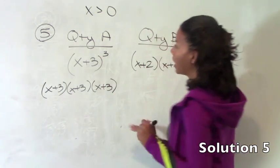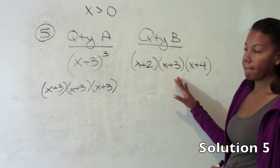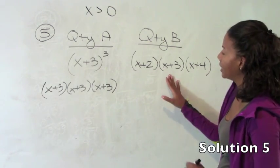x plus 3 cubed means x plus 3 times itself 3 total times. Now you'll see that quantity a looks very similar to quantity b.